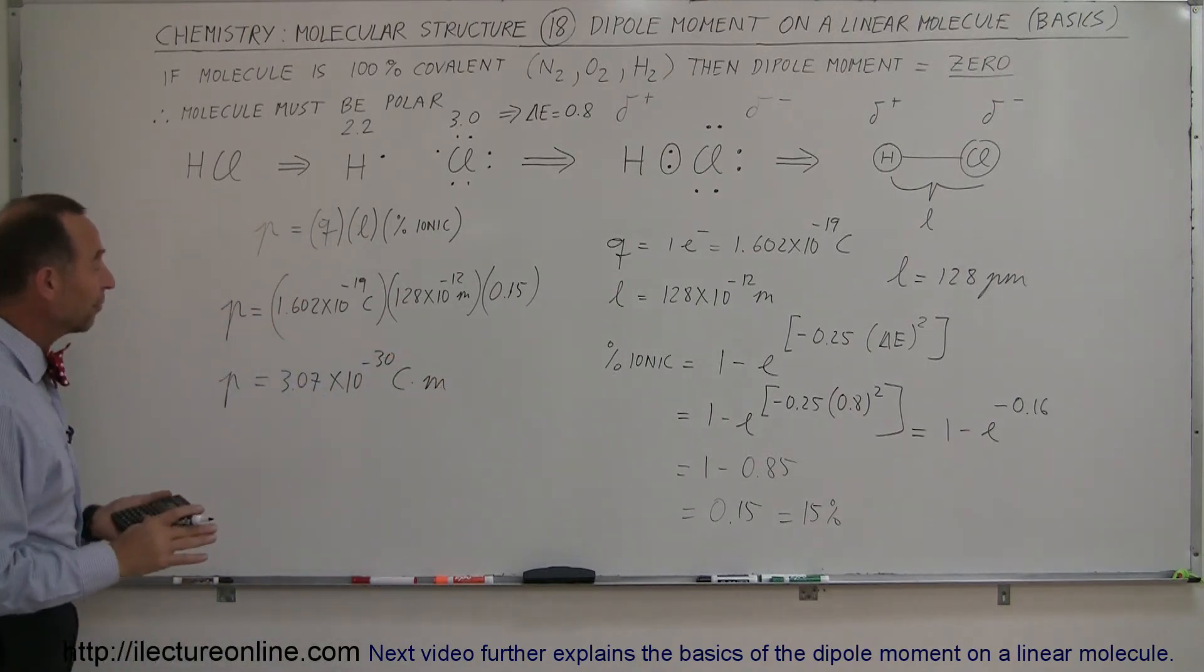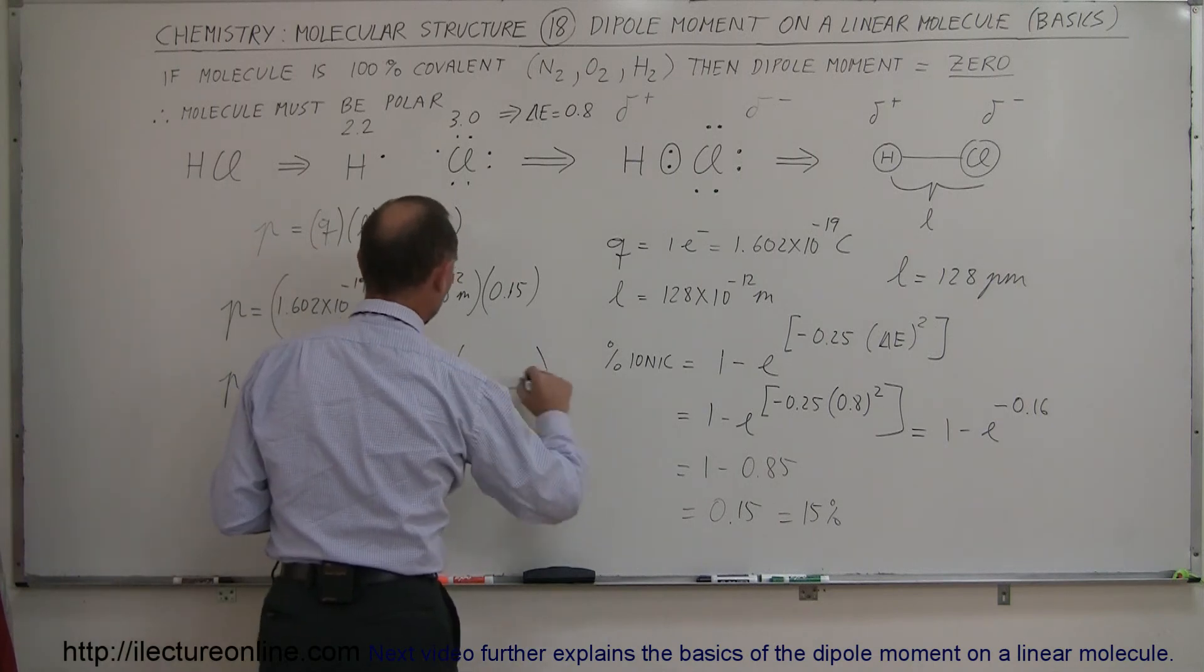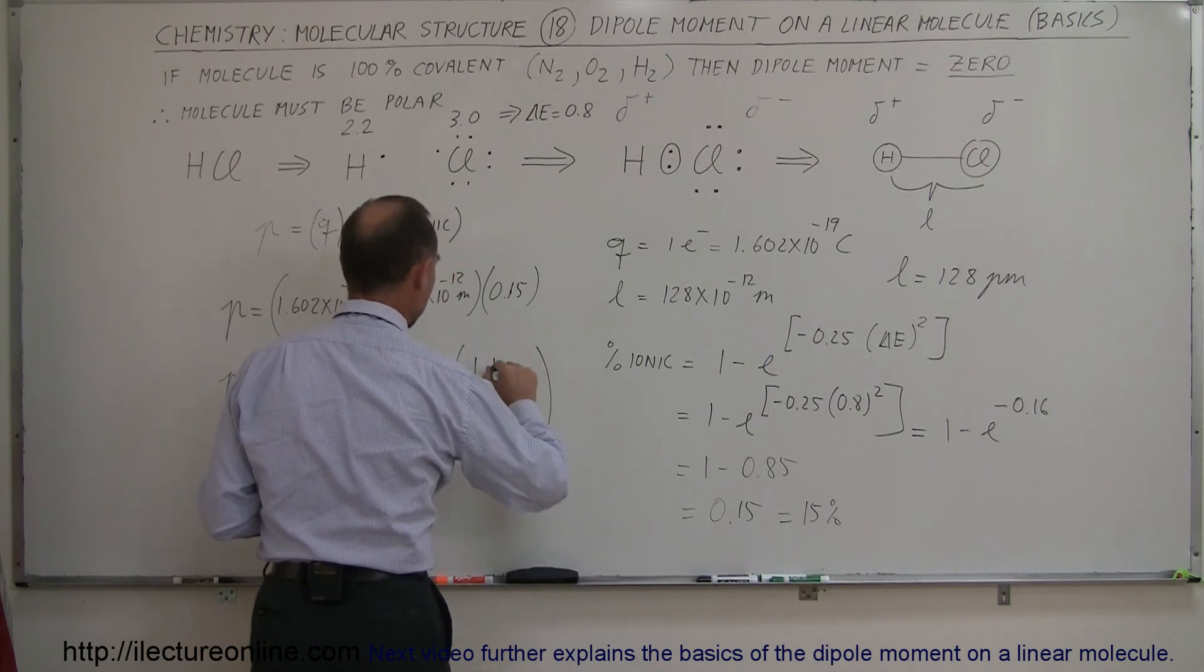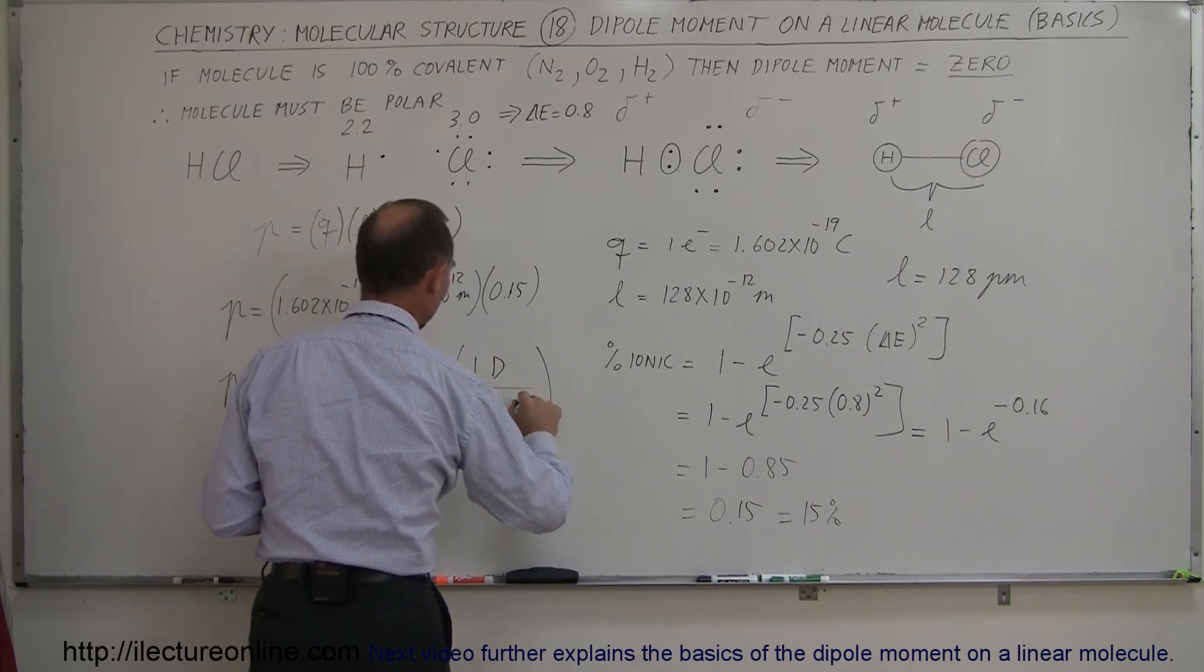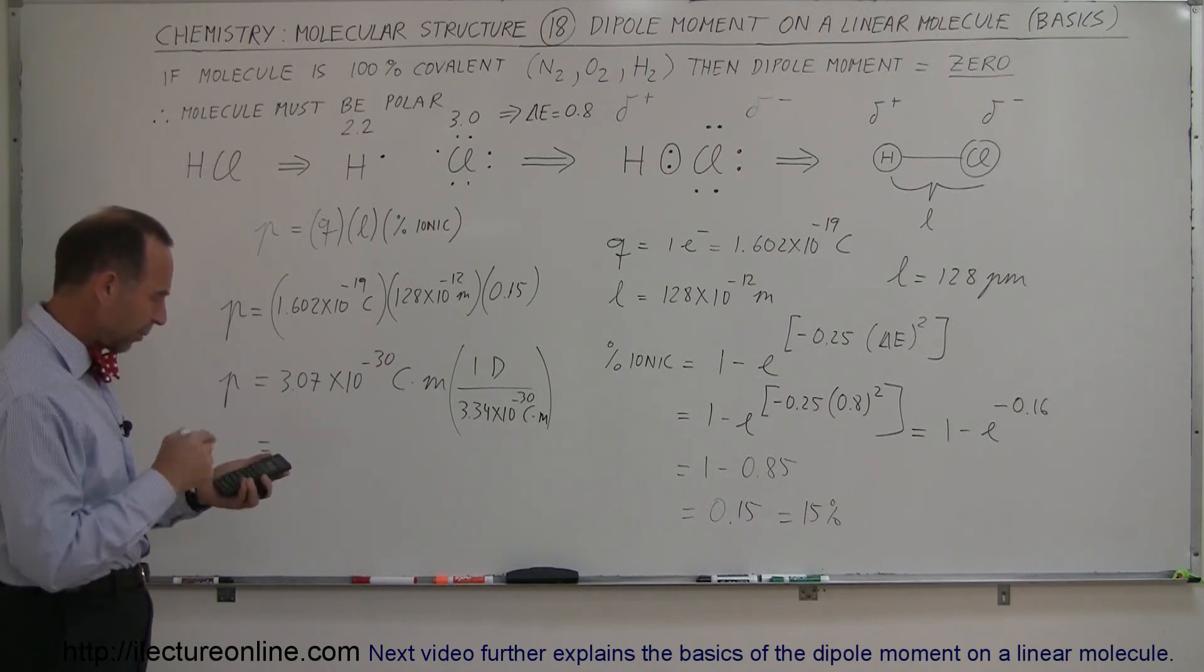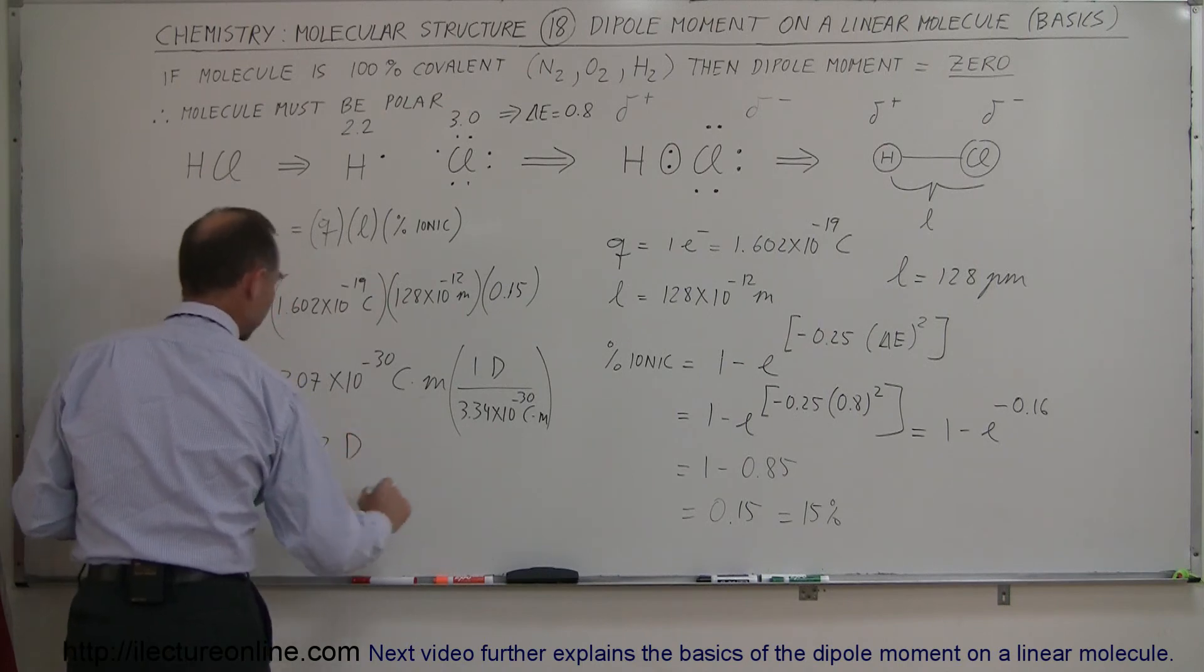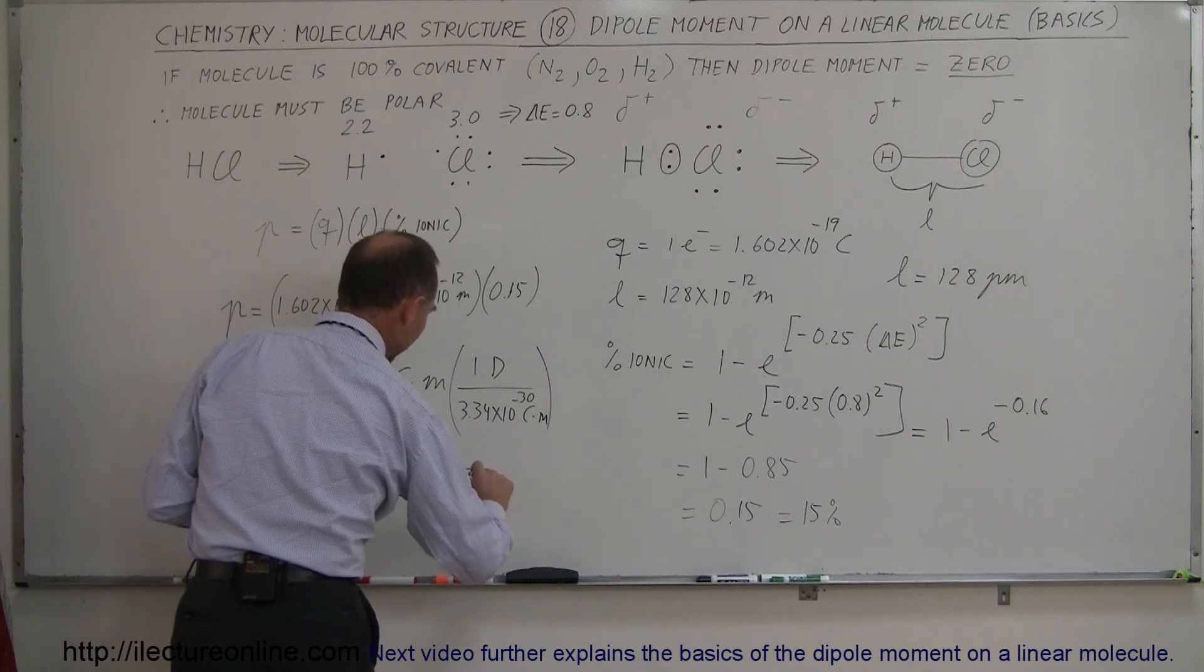Now, remember that if we divide that by 3.34 because sometimes we like to use units of Debye, and so we then convert that to the Debye. So we have 1 Debye, that's the capital D, 1D divided by 3.34 times 10 to the minus 30 Coulombs times meters. So divide this by 3.34 E to the 30 minus equals, and so we have about 0.92 Debye. So D stands for the Debye, which is a standard unit for the dipole moment of the molecule.